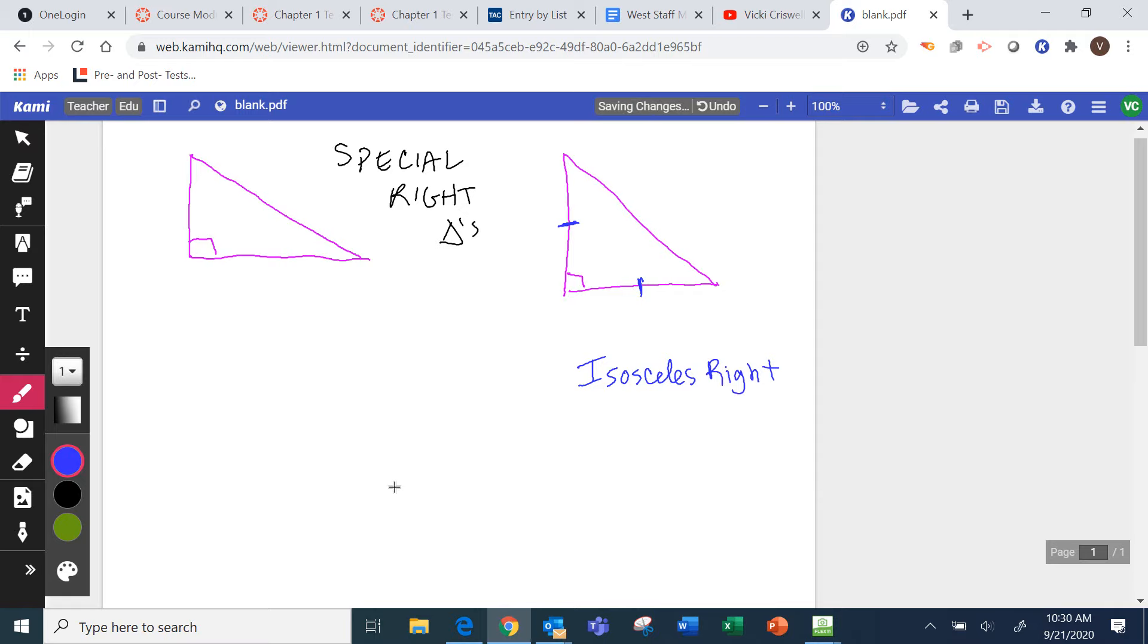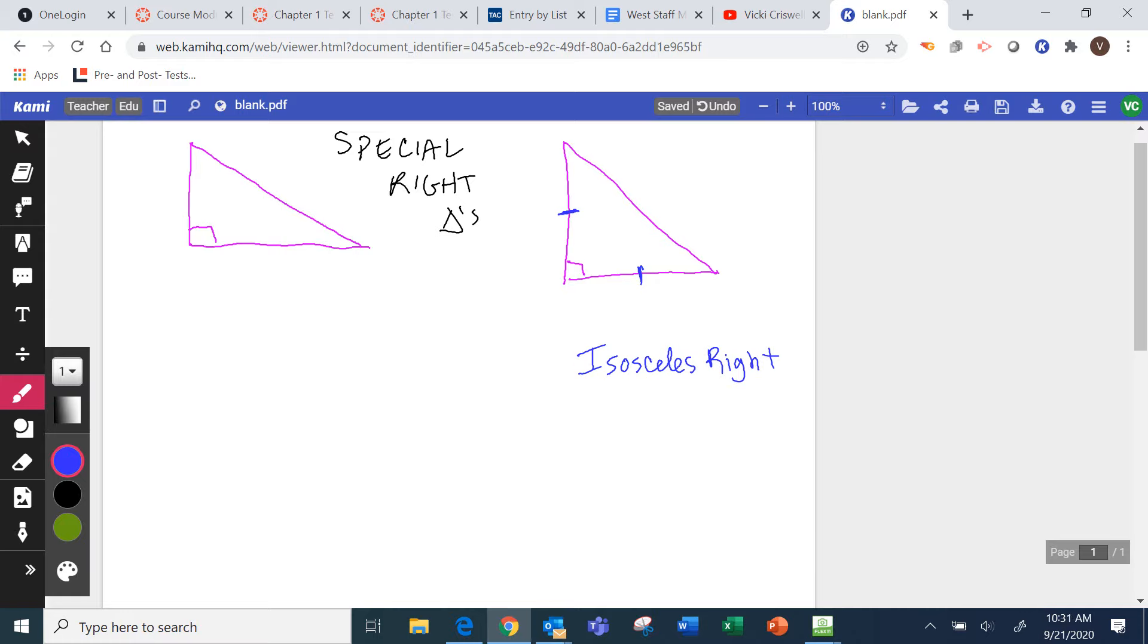And in this case, we're going to talk about the angles that make an isosceles right triangle. What are the two acute angles? 45 and 45, because they're both the same. This is a 45-45-90 triangle.